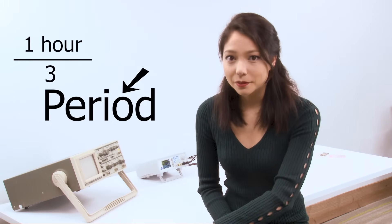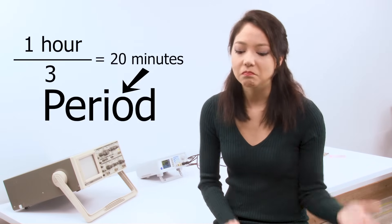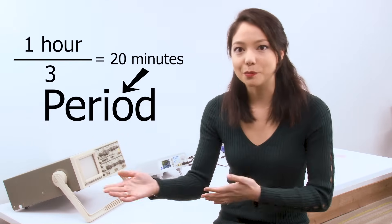To jump back to my bathroom break example, if you go three times in an hour, that period is 20 minutes, the amount of time between each bathroom break. The period measurement is also super useful.